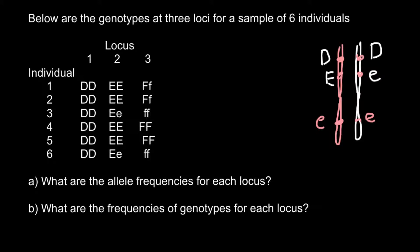Now let's analyze what we have in the table. These are the individuals: individual one, individual two, individual three, and so on. We have three loci for each individual. Our first question, Question A: what are the allele frequencies for each locus?